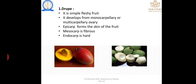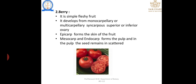Classification of fleshy fruit: Drupe — a simple fleshy fruit developed from a monocarpellary or multicarpellary ovary; epicarp forms the skin, mesocarp forms the fibrous layer, and endocarp is hard; examples are mango and coconut. Berry — a fleshy fruit developed from a monocarpellary or multicarpillary syncarpous superior or inferior ovary; epicarp forms the skin, mesocarp and endocarp form the pulp, and seeds are scattered in the pulp.